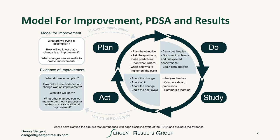In the model for improvement, in the PDSA, and in the results that come from the PDSA, we have the evidence of improvement. We can identify what we accomplished, what we learned, and whether we actually made an improvement. It is important for us to think about how we've clarified the aim, tested our theories with each discipline cycle of the PDSA, and how we've evaluated the evidence.